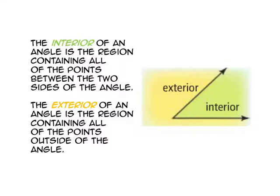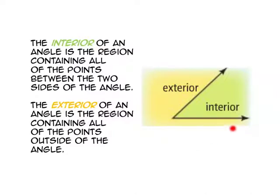The interior of an angle is the region containing all the points between the two sides of the angle — here's my angle sides, and this is the interior. The exterior of an angle is the region containing all the points outside of the angle — this is the exterior, outside of those rays.